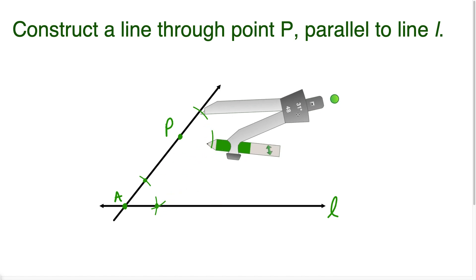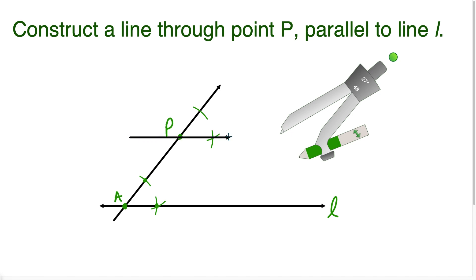Now I move the compass over here to the point on the new line, and we're going to swing that arc like this. Now we have two points to draw our line. We're going to draw a line that goes through point P and hits the intersection of the arcs we just created.